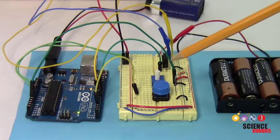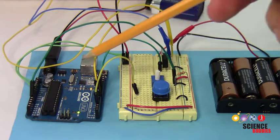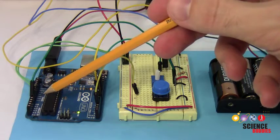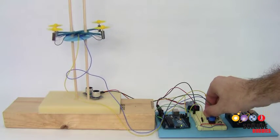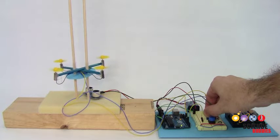A potentiometer in the circuit sends a variable voltage to one of the Arduino's analog inputs. As you adjust this voltage, the Arduino converts it to a desired target height.